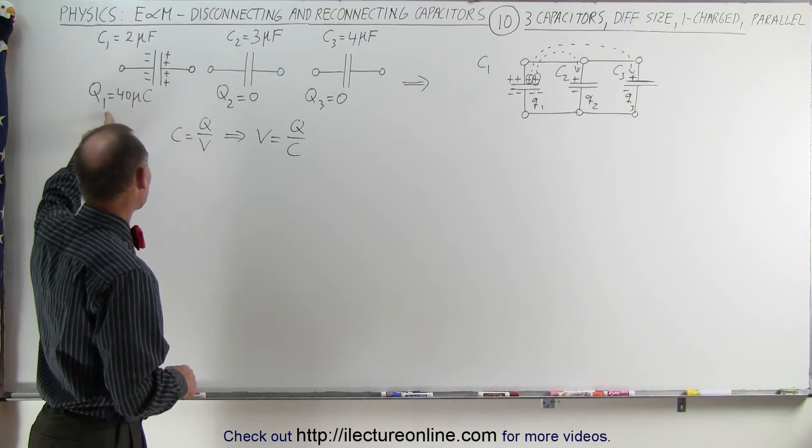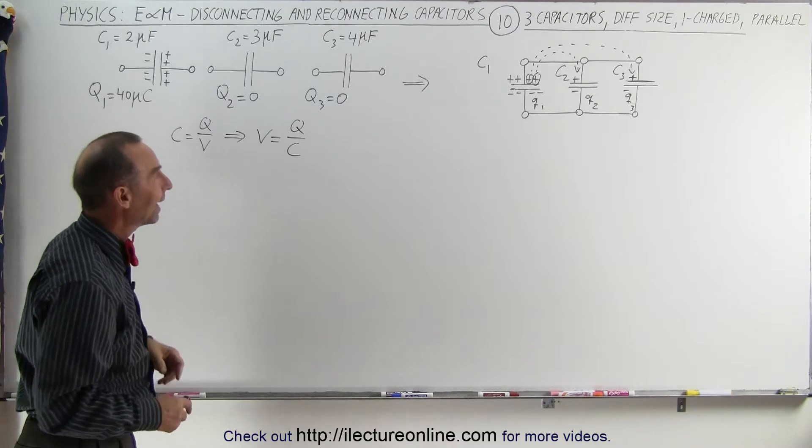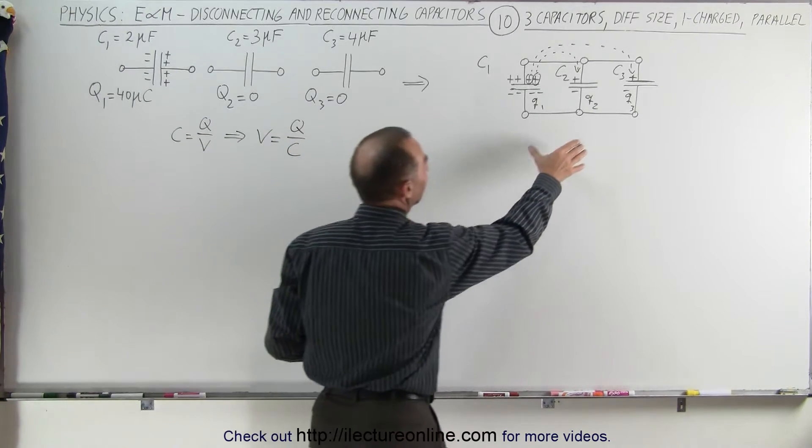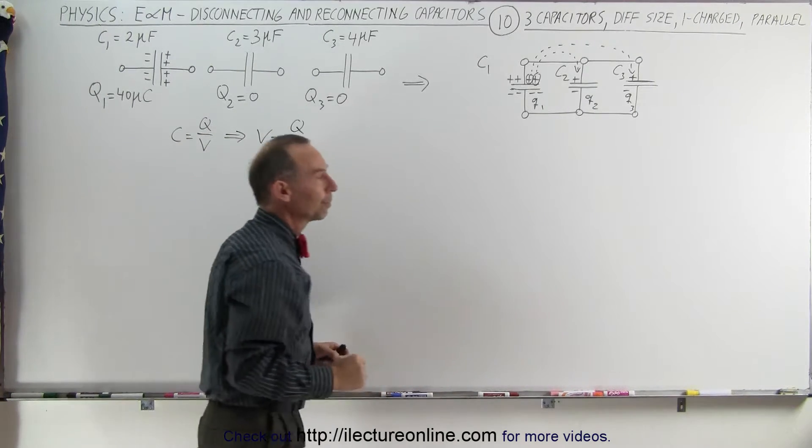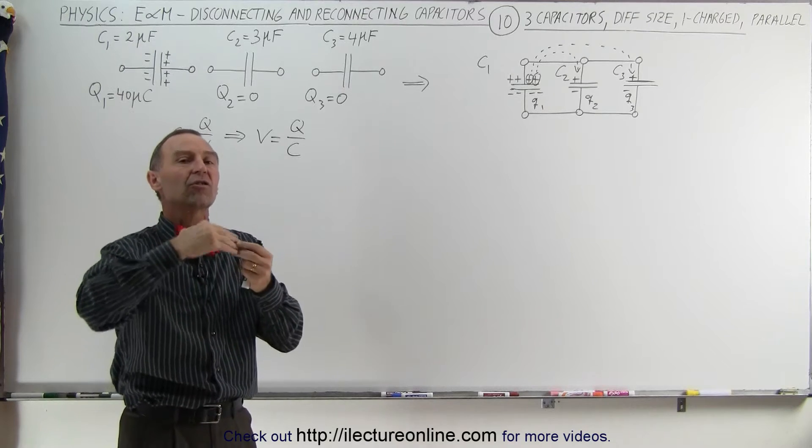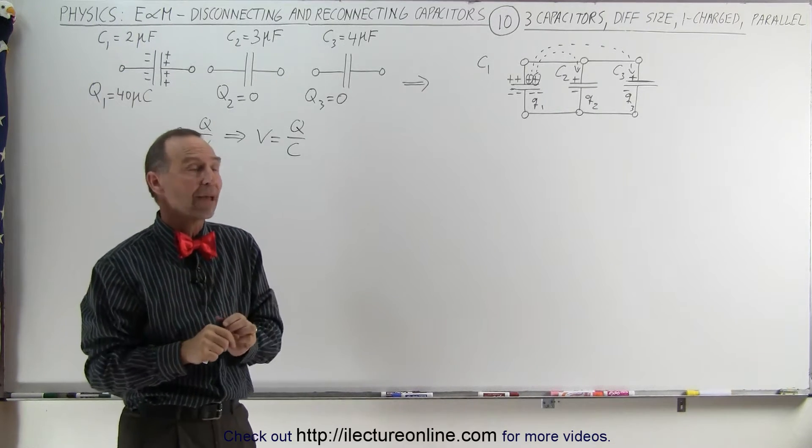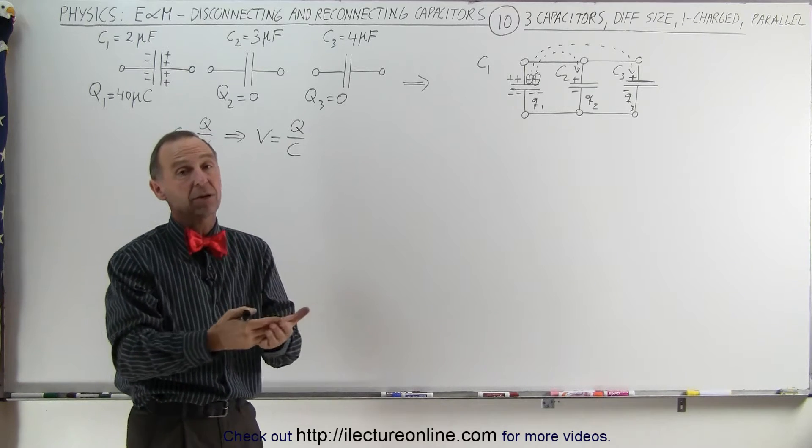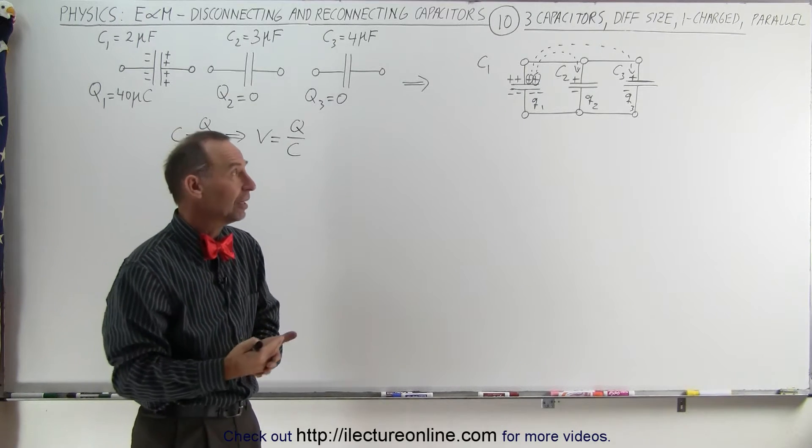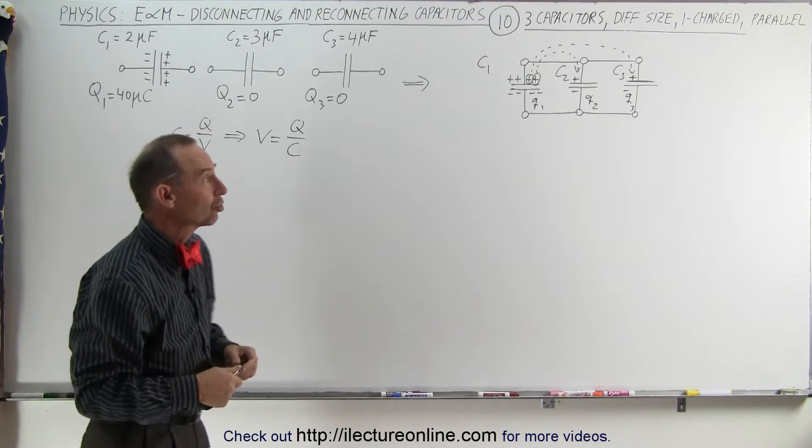Only the first one is charged initially with 40 microcoulombs and we're still connecting them in a parallel connection. But now the amount of charge that is distributed over the three capacitors is not going to be the same for each capacitor. It's going to be different because the size of capacitors are different and they each can hold a different amount of charge.